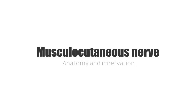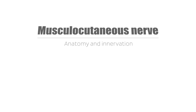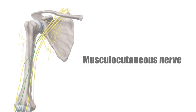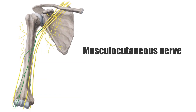Hello everyone, this is Matt from KenHub, and in this tutorial we will discuss the anatomy and innervation of the musculocutaneous nerve. The musculocutaneous nerve is a major peripheral nerve in the upper arm.